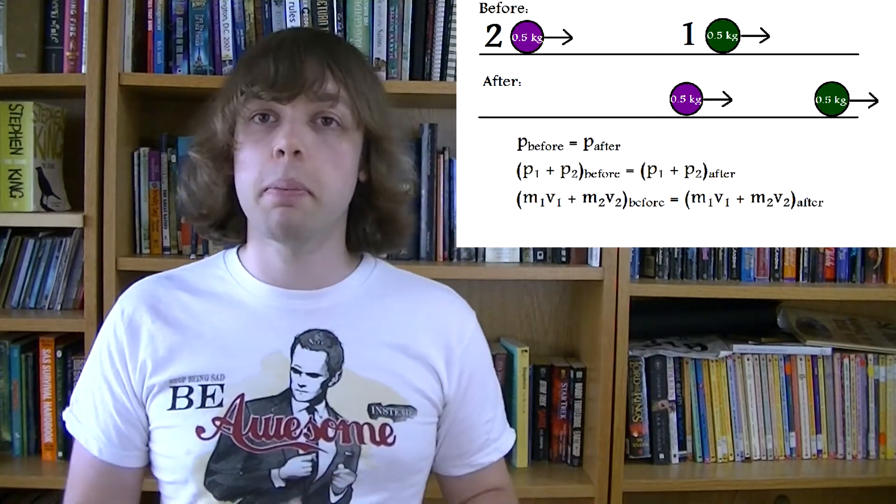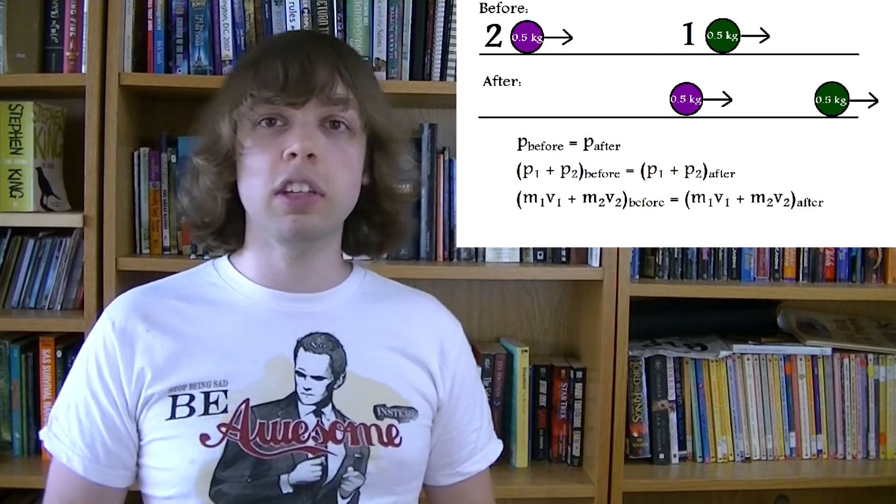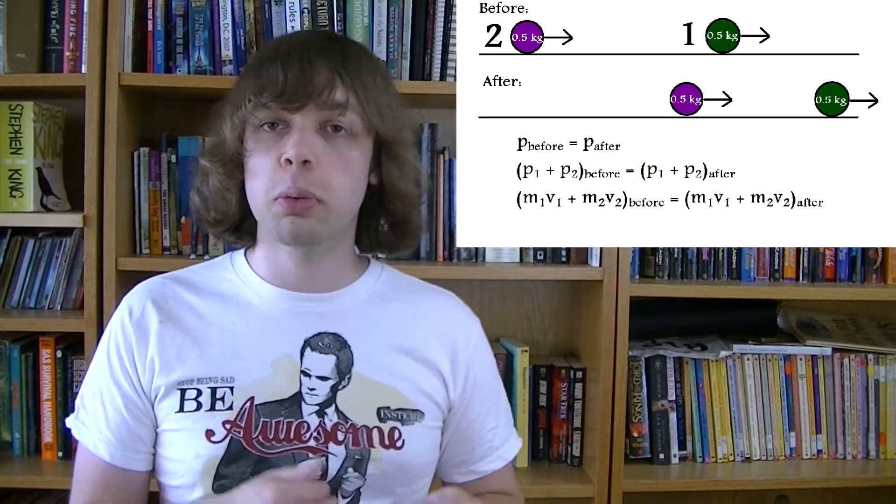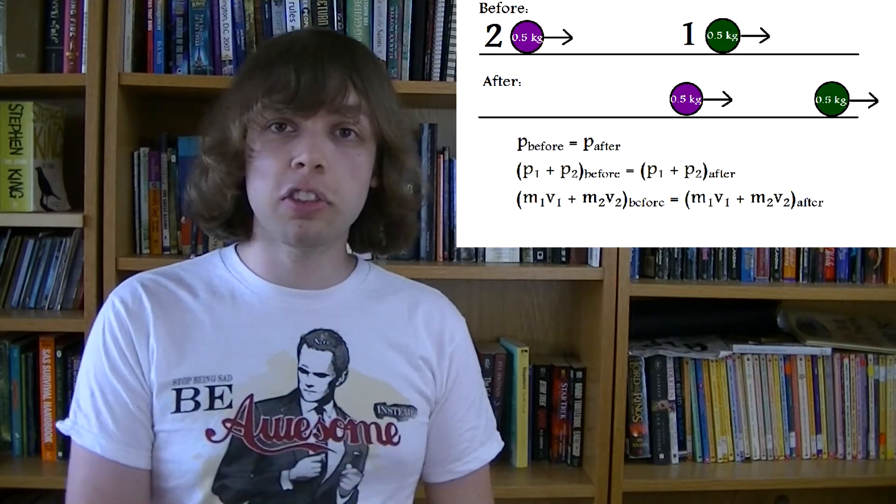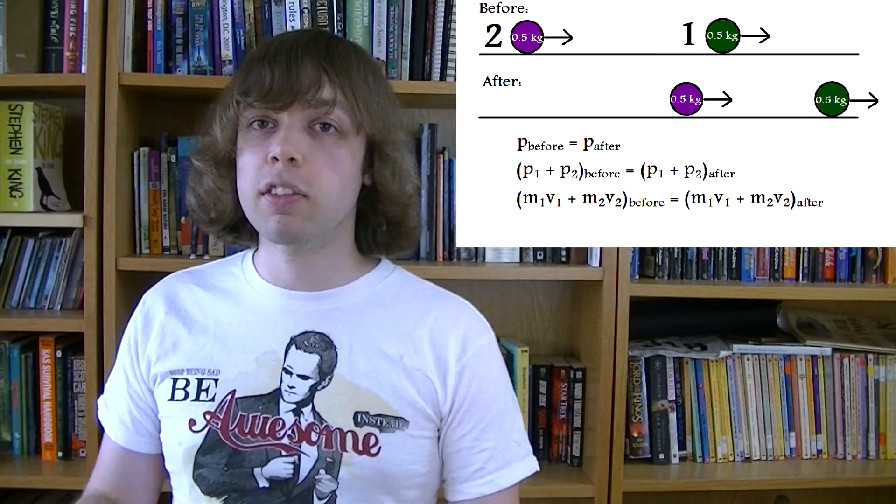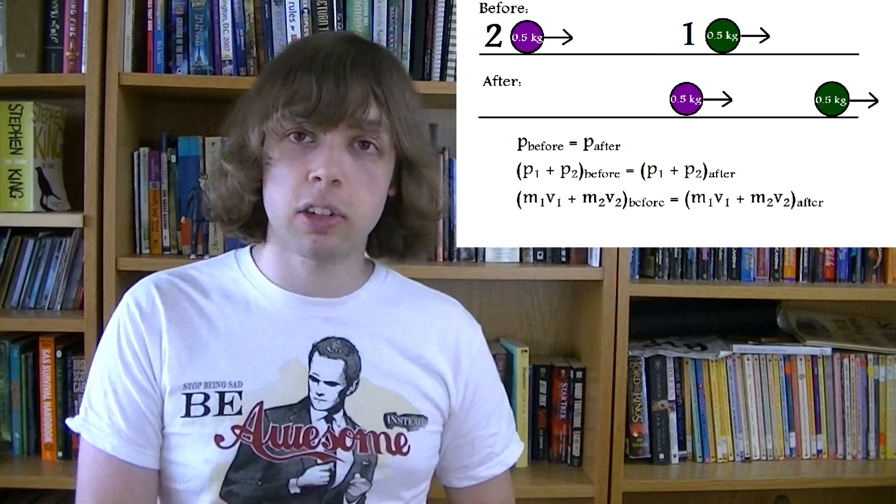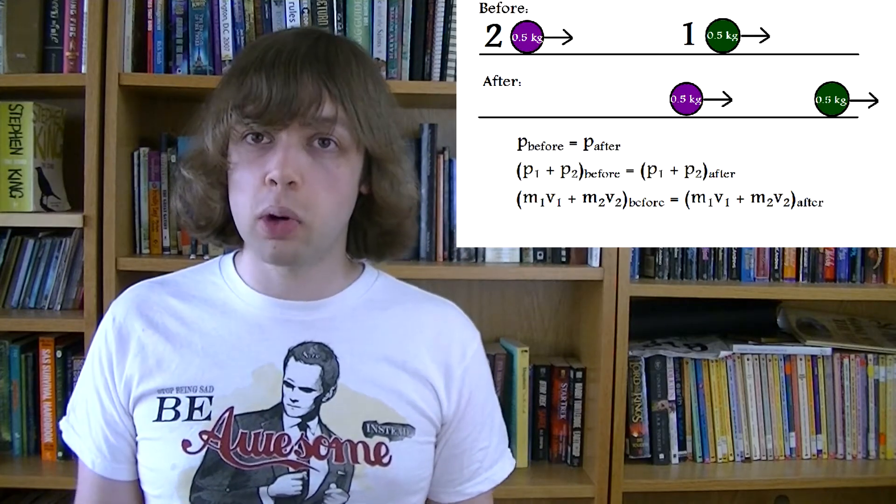We know that momentum is mv, so we can just add up all the momentum before the collision and make it equal to all the momentum after the collision. We have m1v1, the mass of ball 1 multiplied by the velocity of ball 1, plus m2v2, the mass of ball 2 multiplied by the velocity of ball 2. Now we have most of these numbers. We're given the velocities of both balls before the collision, we're given the mass of both balls, and we're given the velocity of the second ball after the collision. So we know everything except the one thing we're trying to find, which is the velocity of the first ball after the collision.